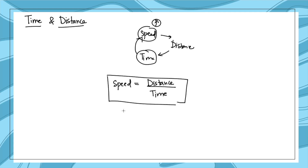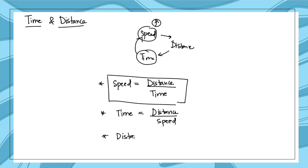Based on this formula, different types of questions are asked in CSIR NET — questions based on trains, boats and rivers, and so on. From the main formula speed = distance/time, you can derive others: time = distance/speed, and distance = speed × time. You only need to remember one formula; the others you can derive yourself.